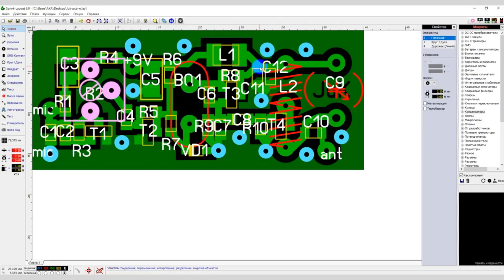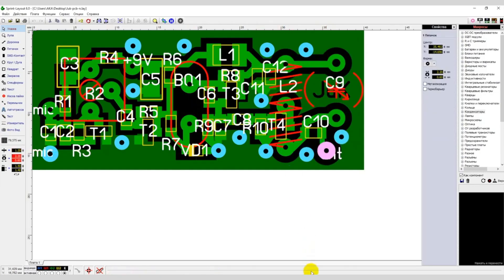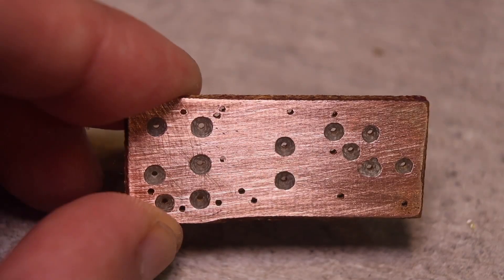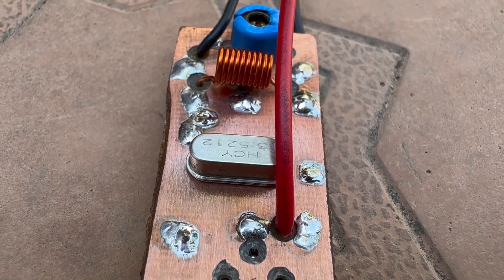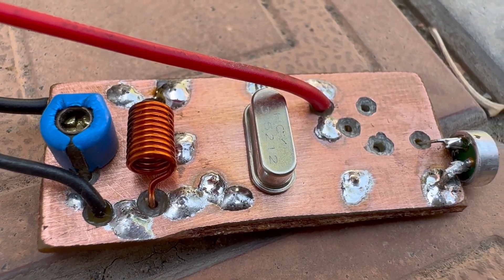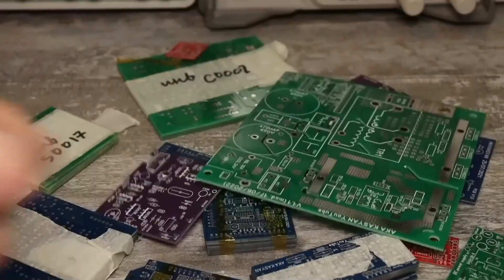For other unmarked holes the process is different. After drilling these holes they need to be countersinked on the ground side, because the output components will be installed on this side later, and they shouldn't be shorted to the ground. Countersinking is done to ensure sufficient distance from the component pin to the ground.